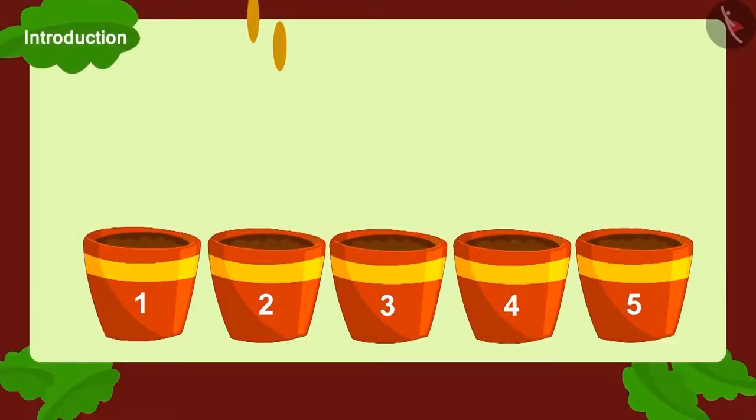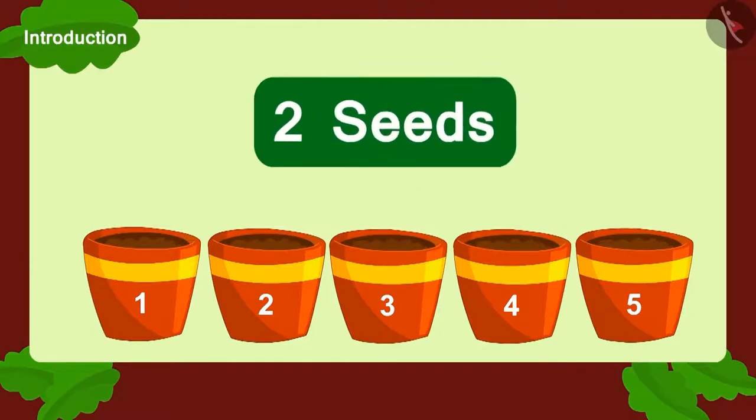In all, Golu planted seeds in five pots. And how many seeds did he plant in each pot? Two seeds.